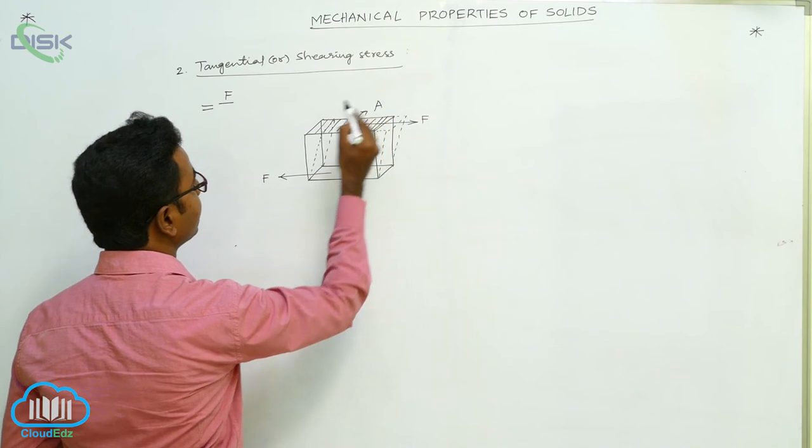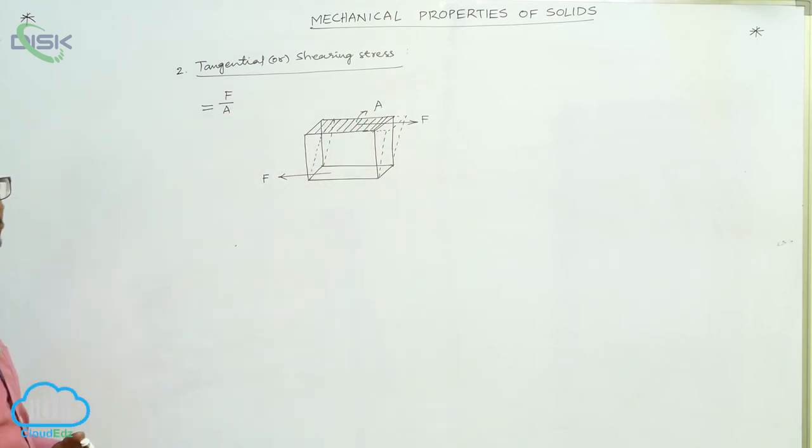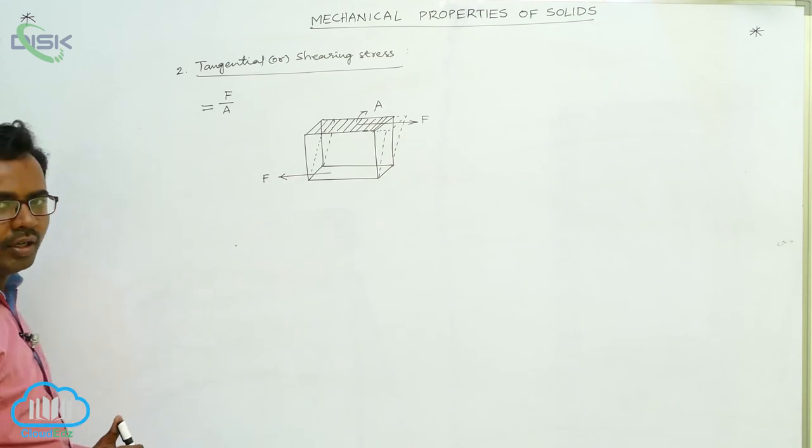Suppose this area is A, so tangential or shearing stress equals applied force by area A. Every stress is calculated by the same formula: force by area.